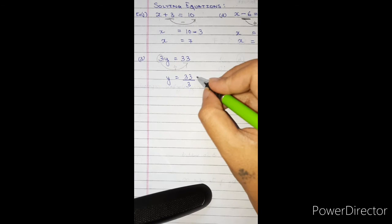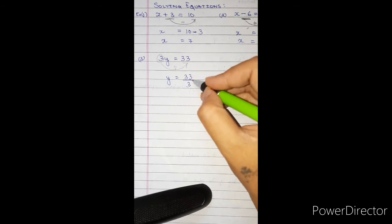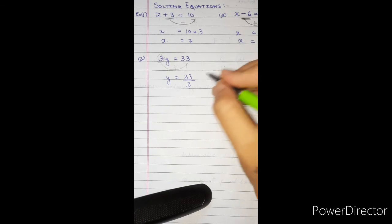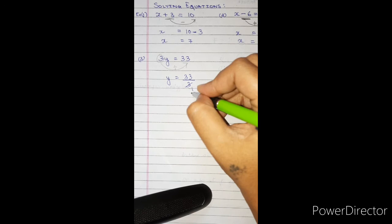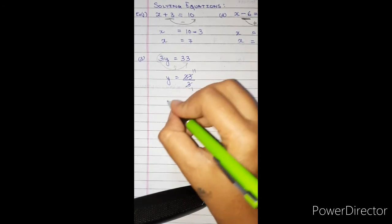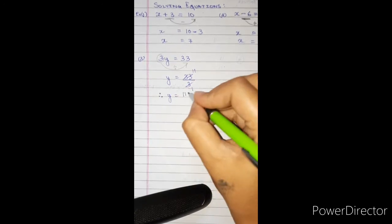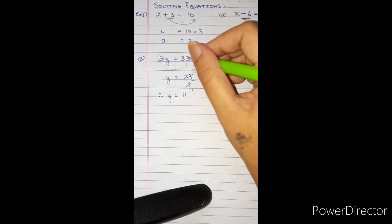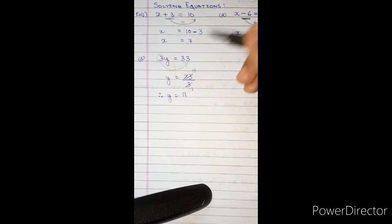We get y = 33 ÷ 3, which is the same as the fraction 33 over 3. We can cancel: 3 elevens are 33, so y = 11. Let's check: 3 times 11 is 33. Yes, correct.